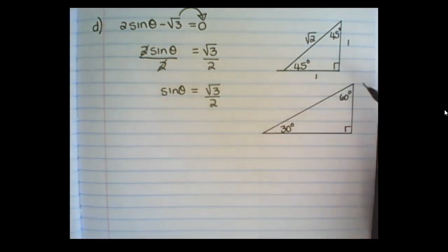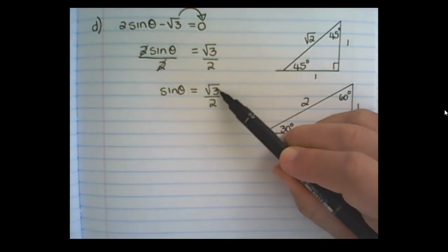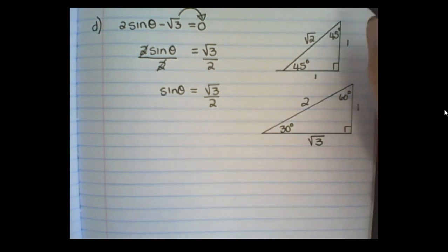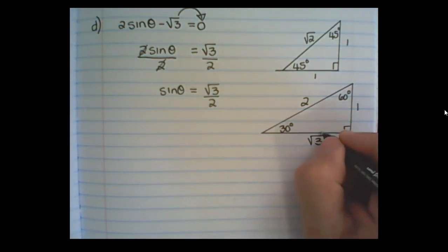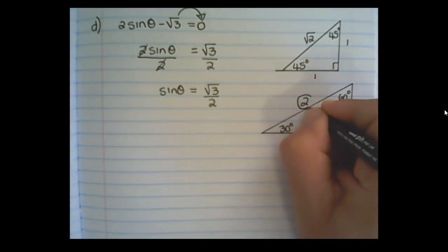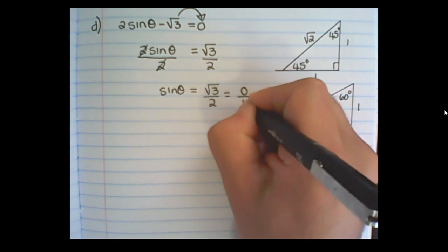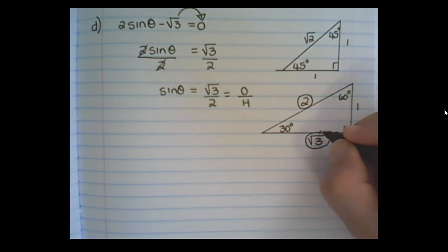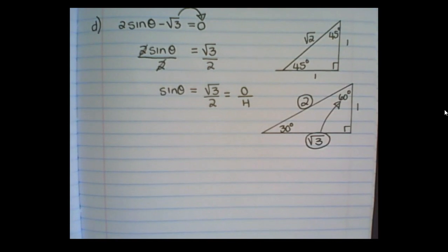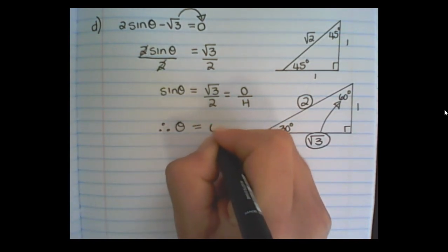Now that I have this ratio, I can identify which special triangle to use. The 45-degree triangle has no √3 or 2, so I won't use that one. Looking at the 30-60-degree triangle, I find there is a √3 and a 2. Since sine equals opposite over hypotenuse, the 2 is the hypotenuse and √3 is the opposite. The angle opposite that side is 60 degrees, therefore theta equals 60 degrees.